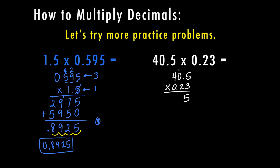5 times 3 is 15. 3 times 0 is 0, plus 1 is 1. 3 times 4 is 12. Now this is where a lot of people make a mistake — I'm going to mark out that 3, put my zero placeholder, and start with 2. 2 times 5 is 10. Carry the 1. Now 2 times 0 is 0, so then I add my 1 and get 1. A lot of times people will incorrectly say 2 times 0 is 2, plus 1 is 3 — make sure you remember that any number times 0 is 0. Then 2 times 4 is 8.